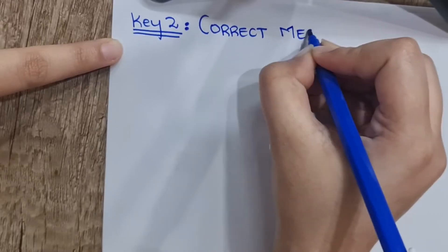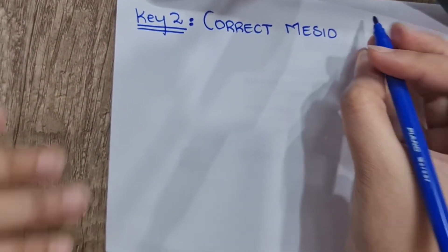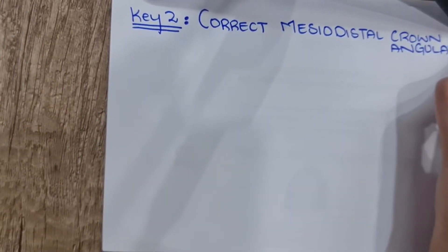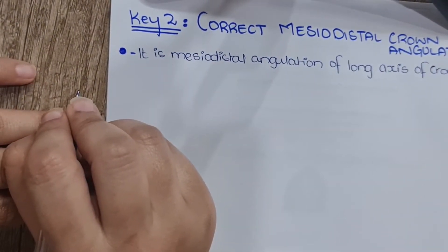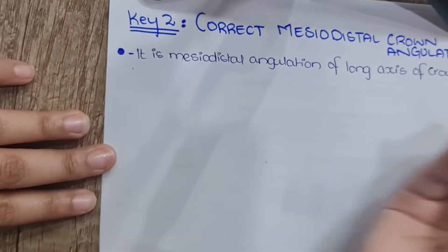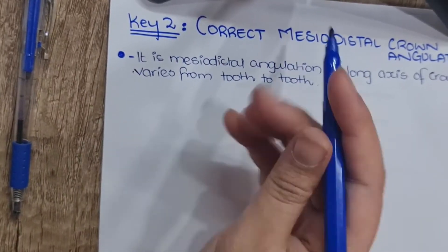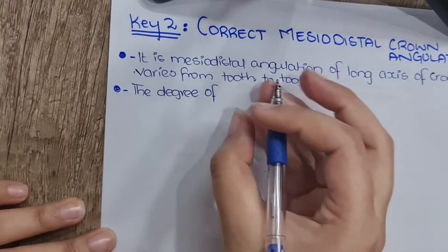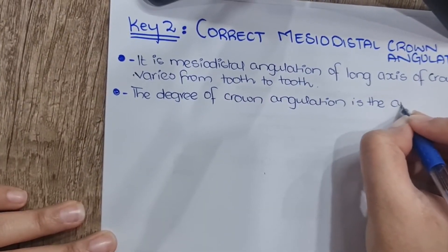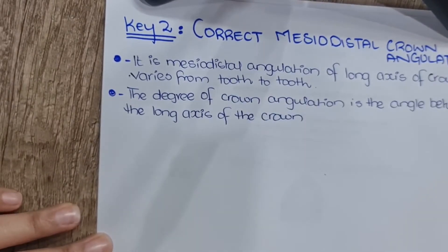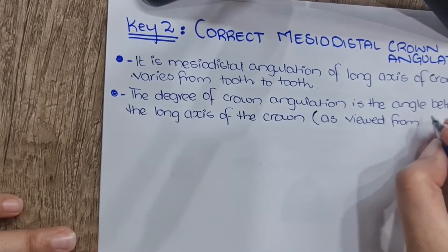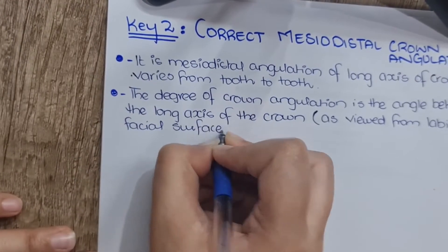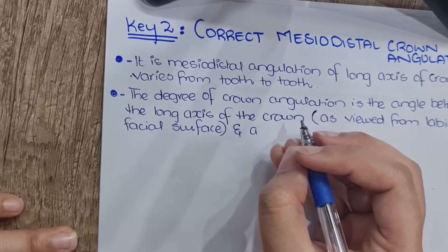Key two is mesio-distal crown angulation, also known as tip. It refers to the mesio-distal angulation of the long axis of the crown, and it varies from tooth to tooth. The degree of crown angulation is the angle between the long axis of the crown as viewed from the labial or facial surface and a line bearing 90 degrees from the occlusal plane.